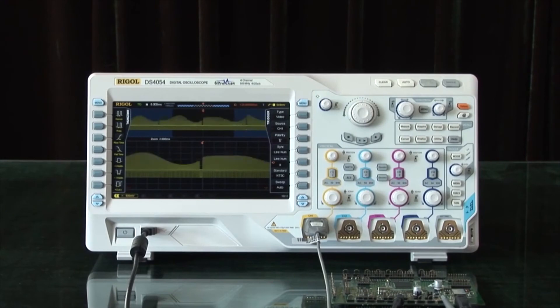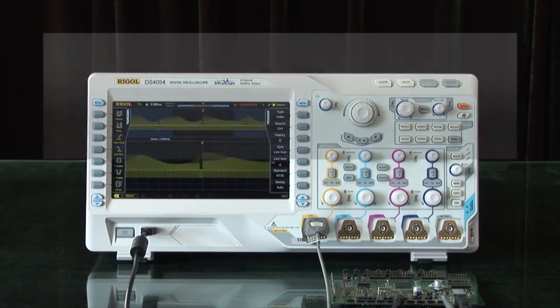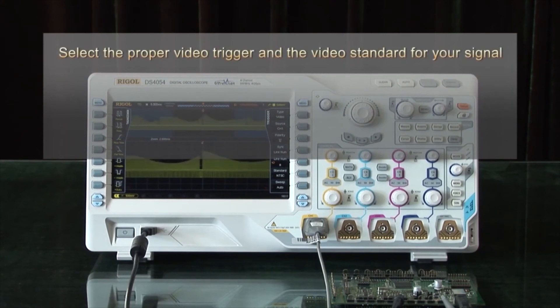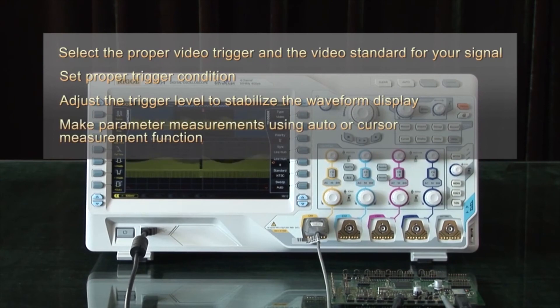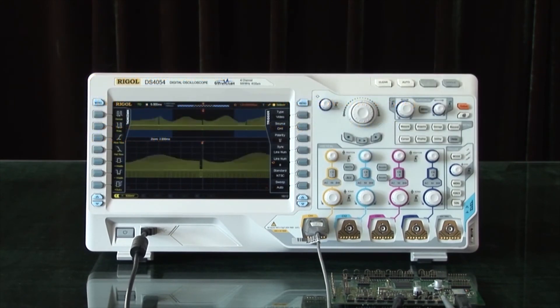This concludes the introduction to using the video trigger of a Regal oscilloscope to measure video signals. The key points include selecting the proper video trigger and the video standard for your signal, set the proper trigger conditions, adjust the trigger level to stabilize the waveform, and make parameter measurements using auto or cursor measurement functions.